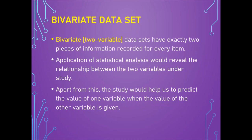The bivariate or two-variable datasets have exactly two pieces of information recorded for every item. Application of statistical analysis would reveal the relationship between these two variables under study. Apart from this, the study would help us predict the value of one variable when the value of the other is given. For example, a table comprising the cost of production per unit and the number of units produced can be analyzed using correlation analysis to study the degree of relationship between cost and units produced.